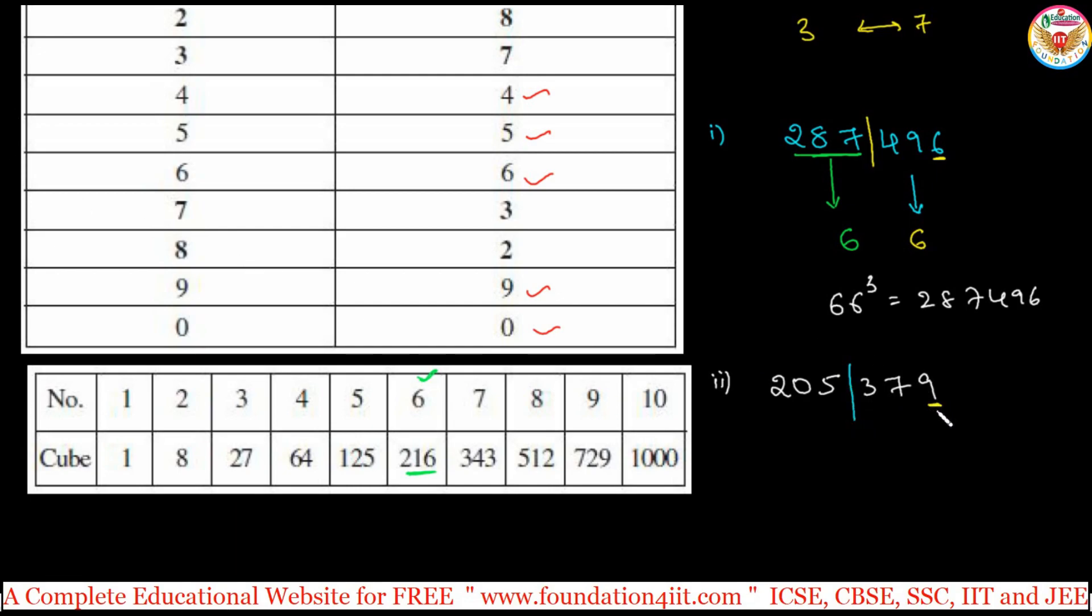According to the units place is 9, so for 9 we are getting again 9 only. Already know this order, so according to this set is 9. Now 205 is nearest to which perfect cube in this list. You should have memorized this. 205 - 125 is less, next is 216. So 125 only, that means 5. 59 cube is 205,379. So the perfect cube of this number is 59.